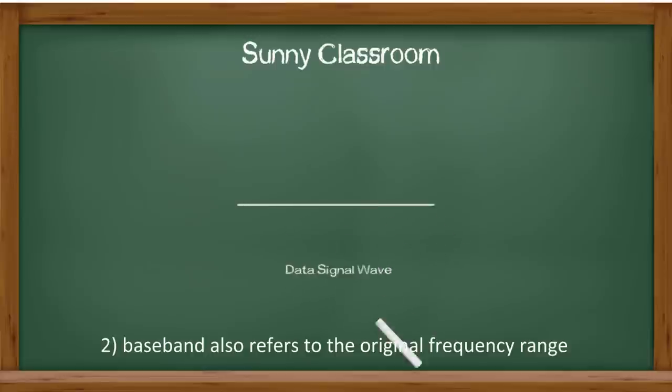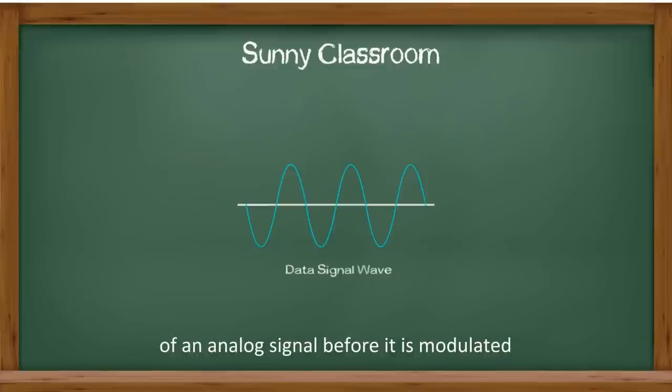Number two: Baseband also refers to the original frequency range of an analog signal before it is modulated to a different frequency range.